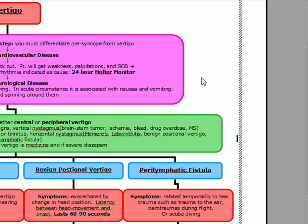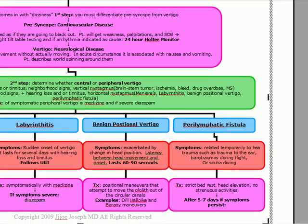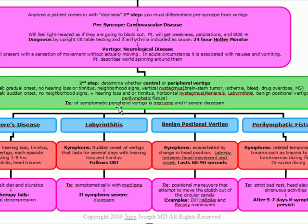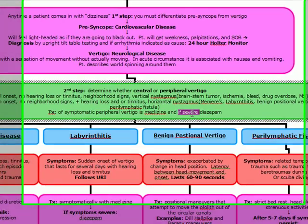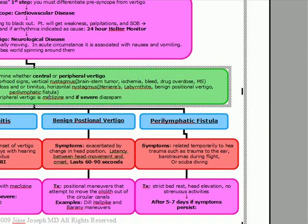Examples of peripheral vertigo include Meniere's disease, labyrinthitis, benign positional vertigo, and perilymphatic fistula. The most important question: what's the treatment of peripheral vertigo? It's meclizine. Only if it's severe do we go to diazepam. Otherwise, symptomatic peripheral vertigo is treated with meclizine.